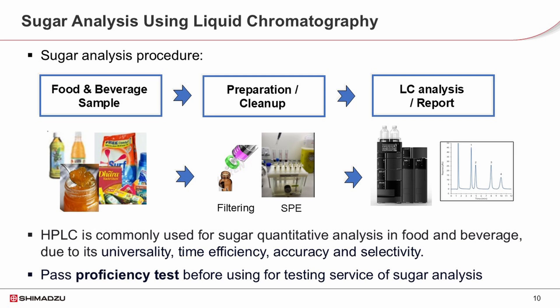Sugar analysis involves sample preparation like extraction, dilution, filtering, and SPE cleanup if necessary. The liquid sample obtained is then injected into the HPLC for analysis, giving quantitative results of individual sugars and the total content of sugars in the sample.